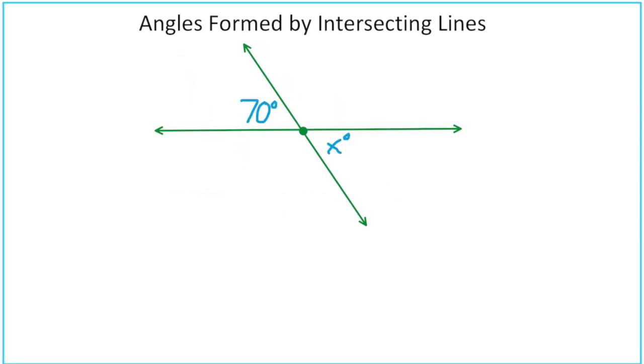So here's the last type of angle relationship we're going to look at in this video. What do we know about that 70 degree angle and the angle labeled x degrees? You probably know the answer to this, but let's take a look at how we could use what we've learned so far to find out what x is.